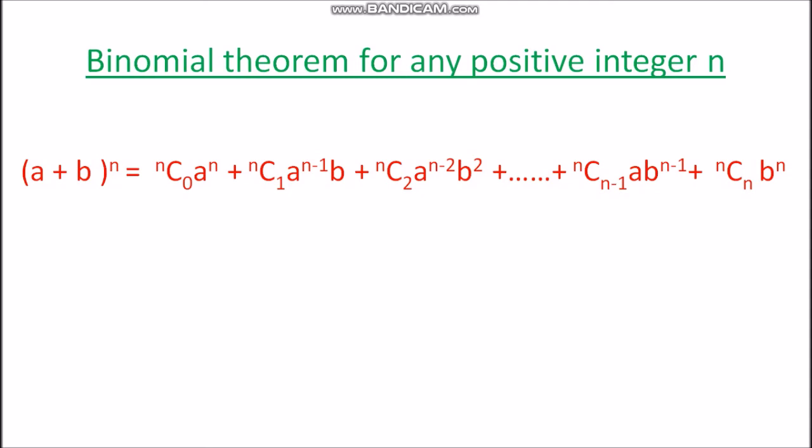So we can see here: this is the Binomial Theorem for any positive integer n. The theorem uses two variables and gives the coefficients and the expansion to any natural number power.